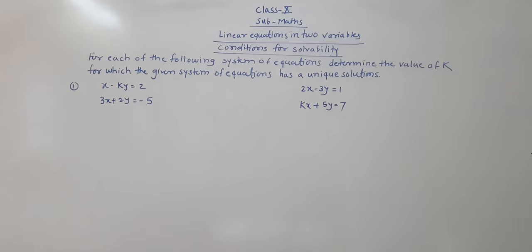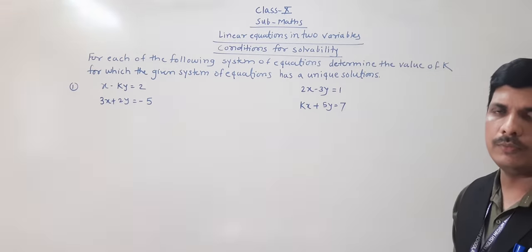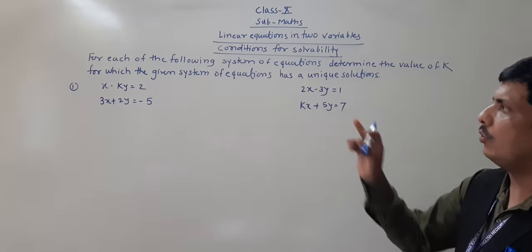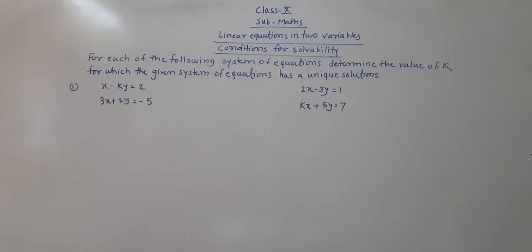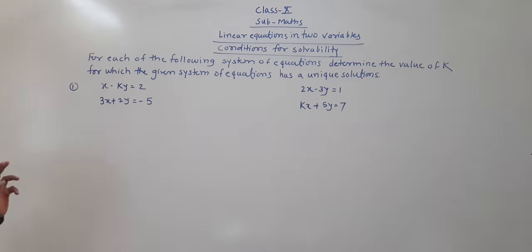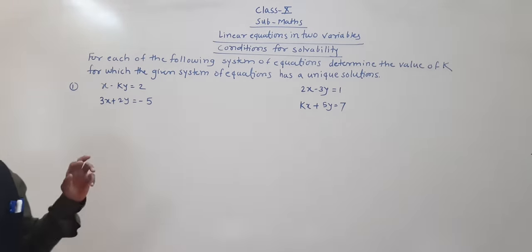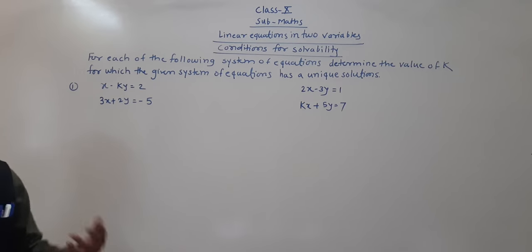Today's topic is conditions for systems of equations. We are going to see some more examples. The first question: for each of the following systems of equations, determine the value of k for which the given system of equations has a unique solution. Yesterday we saw how to compare the ratios when solutions are unique, no solution, or infinitely many solutions.